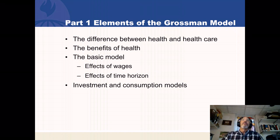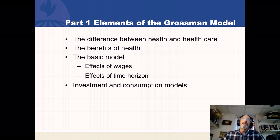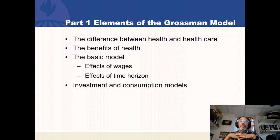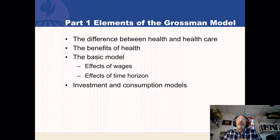What we're going to cover today in the Grossman model is the difference between the demand for health and the demand for health care. Since health is something that people want, we'll briefly talk about why they want it. The basic model will show us the effects of wages and the time horizon on the demand for health. We have to separate the Grossman model into two versions: the investment model, in which one wants to be healthy because it is an investment in productivity of the worker, and the consumption model, in which one wants to be healthy because it makes all the other things you're consuming much more enjoyable.